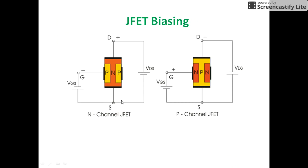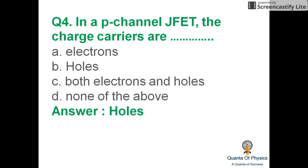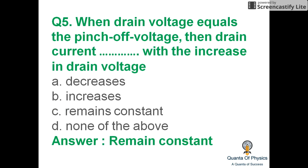For an N-type JFET, the gate is reverse biased, and for a P-type gate it is also reverse biased. The input impedance of a JFET is more than that of an ordinary transistor. In a P-channel JFET, the charge carriers are holes.